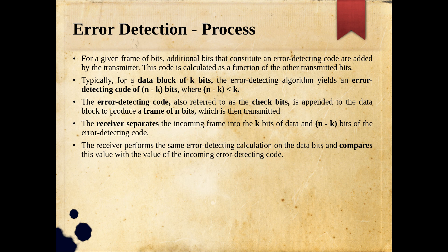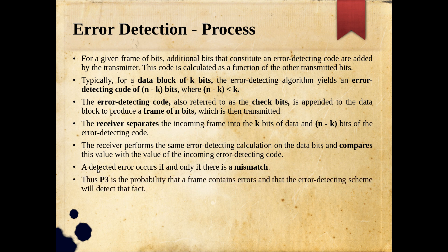The receiver separates the incoming n-bit frame into the k-bit data and the n minus k check bits, both of which may be prone to error. The receiver performs the same error detecting calculation on the received data bits, producing a new error detecting code, then compares this with the incoming check bits. A detected error occurs if and only if there is a mismatch — meaning if there is error there will definitely be a mismatch, and if there is a mismatch there is definitely error. However, a match only tells us with high probability that there is no error.